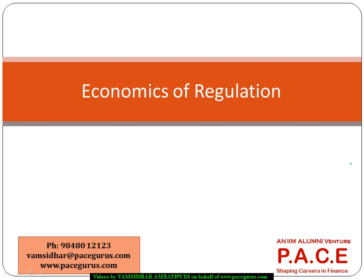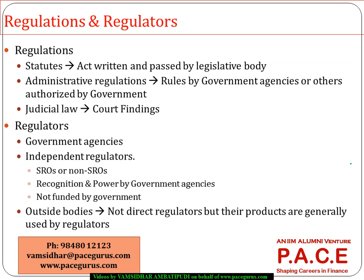We will look at aspects of regulation starting with the different types of regulations available, who could become regulators, various theories and interdependencies with respect to regulations, the various tools in terms of regulations, and finally the cost versus benefit analysis of regulations for various industries and companies. This is purely an economic aspect of regulation.